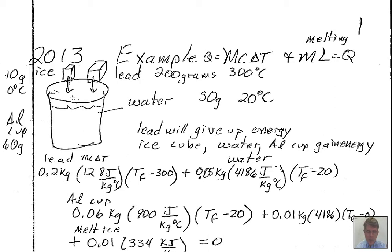We're going to drop into the water 10 grams of ice that has a temperature of 0 degrees Celsius, so it will not need to warm up before it starts to melt. It's already at the melting point — all ice, 10 grams, 0 degrees Celsius. We are also going to put into the water 200 grams of lead that has a temperature of 300 degrees Celsius.